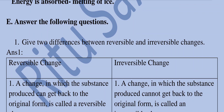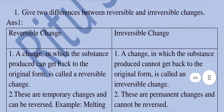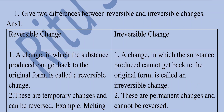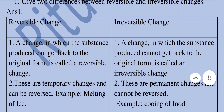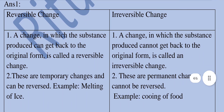Give two differences between reversible and irreversible changes. Try to do it in tabular form. Reversible change: a change in which the substances produced can get back to the original form is called a reversible change. These are temporary changes and can be reversed. Example: melting of ice. Irreversible change: a change in which the substance produced cannot get back to the original form is called an irreversible change. These are permanent changes and cannot be reversed. Example: cooking of food.